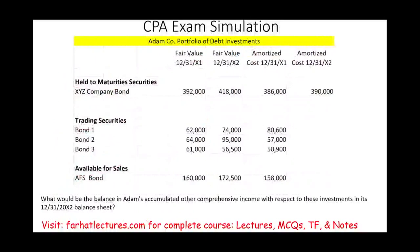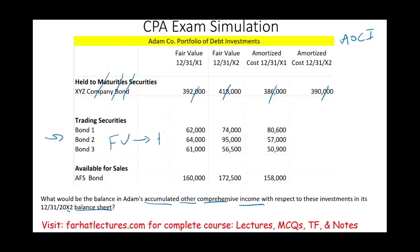Let's answer the second question: What would be in the balance of Adam's accumulated other comprehensive income with respect to these investments as of the X2 balance sheet date? We're looking at AOCI — accumulated other comprehensive income. Which securities affect AOCI? For held-to-maturity, the answer is no — they're reported at amortized cost and therefore don't affect AOCI or comprehensive income. For trading securities, they're reported at fair value, but the corresponding account is an income statement account, so they also don't affect comprehensive income or other comprehensive income.